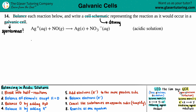When balancing in acidic solution there are eight steps. Step one: break the equation into two half reactions by grouping species that look similar on both sides. Ag⁺(aq) and Ag(s) are both silver, so they go together. NO(g) and NO₃⁻ both have nitrogen and oxygen, so they form the other half reaction.